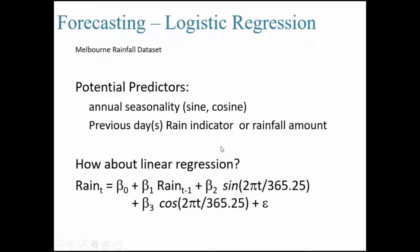To capture the annual seasonality, we have included sine and cosine values. If you use this formula sine of 2πt divided by 365.25, since we have leap years...